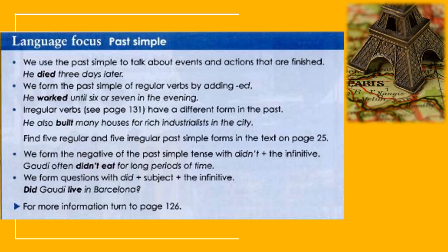For irregular verbs, they have different forms — there is no pattern, so we must memorize them one by one. The irregular verb for simple past tense is the second verb form. For example: 'He also built many houses for rich industrialists in the city.' 'Built' is the second verb form of 'build' — it doesn't add -ed but changes to 'built' with a T.